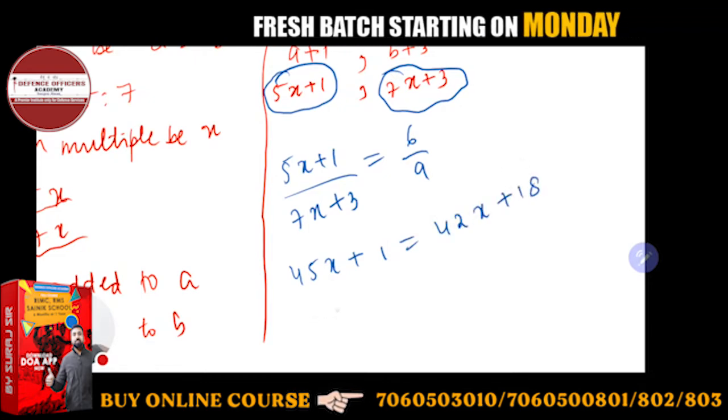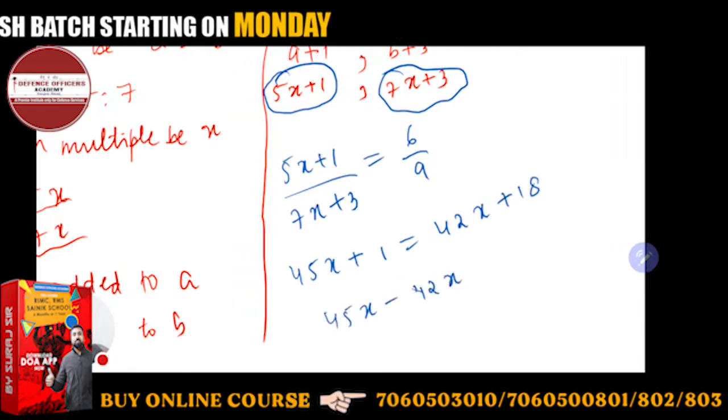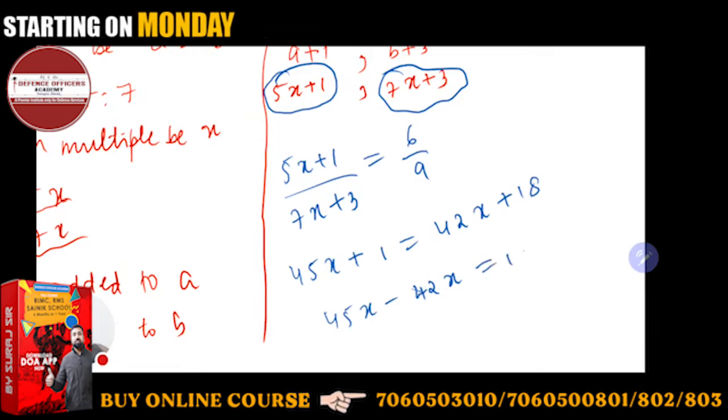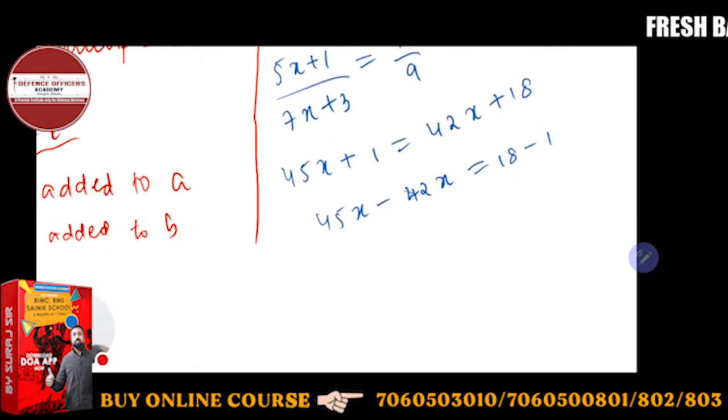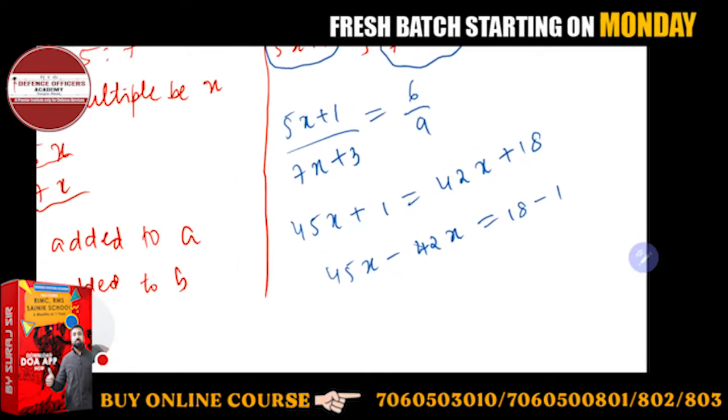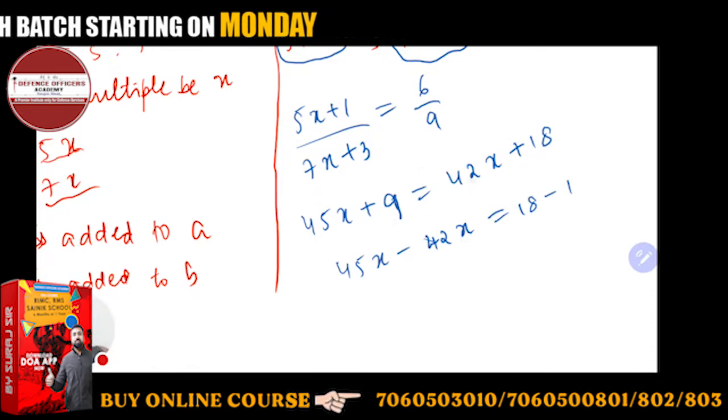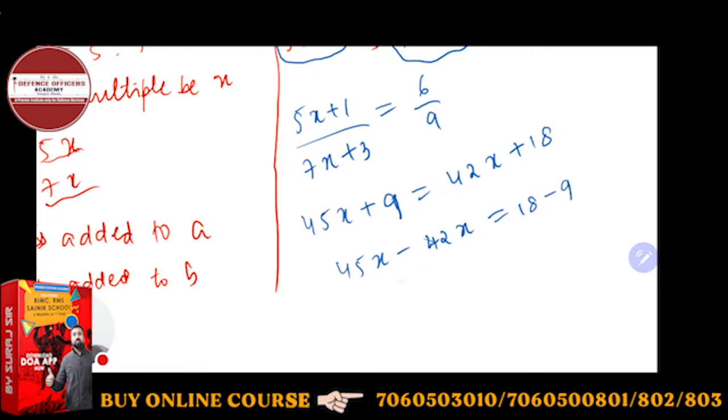So here it will be 45x minus 42x is equal to 18 minus 9. So this will be, 45x plus 9 will going to give you 42x plus 18, so this will going to come 18 minus 9. So from here, 3x will going to come 9, so x will going to come 3.